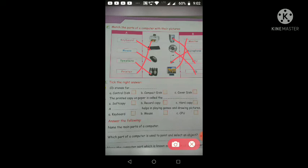Number A is control disc. Number B is compact disc. And number C is cover disc. So what is the full form for CD? That is number B, that is compact disc.